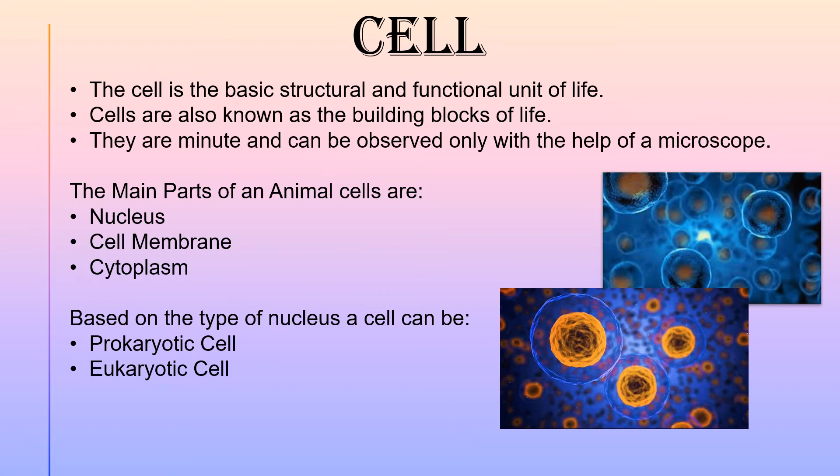Based on the type of nucleus, a cell can be divided into two: prokaryotic cell and eukaryotic cell. Prokaryotic cells are cells that do not have a nuclear membrane around the nucleus — for example, bacteria. Eukaryotic cells are cells that have a true nucleus that is bounded by a well-defined nuclear membrane.